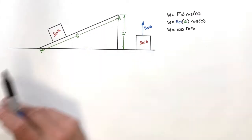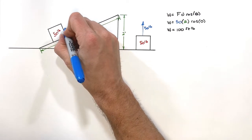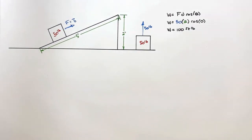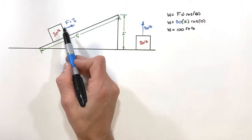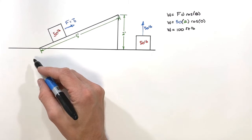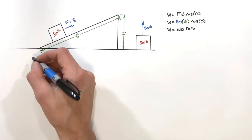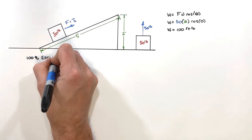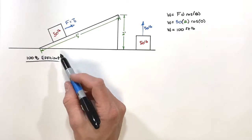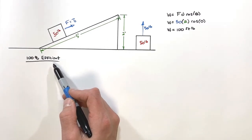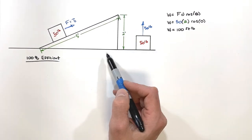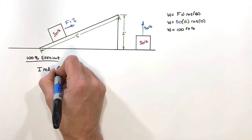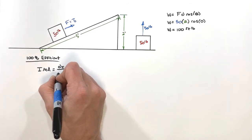The end goal here is to solve for the IMA of this inclined plane, and to figure out the force with which we push the box up the hill, we need these values first. IMA, or ideal mechanical advantage, is given by displacement in over displacement out.